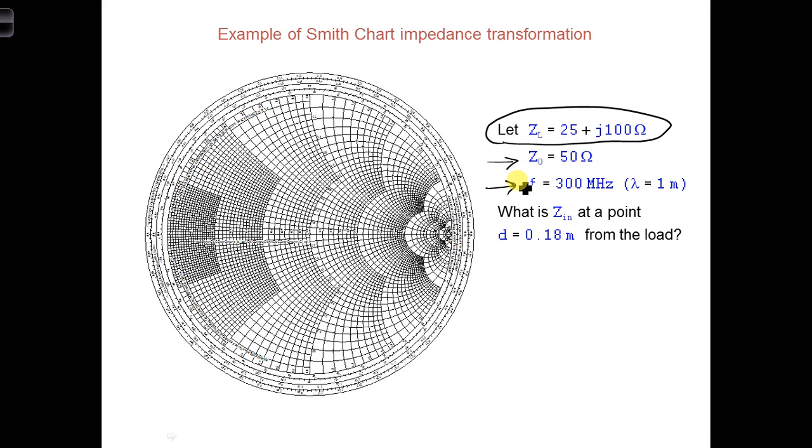The operating frequency is 300 megahertz. We're going to assume free space between the two conductors, so lambda is one meter. What is Z in at a point d equal 0.18 meters from the load?